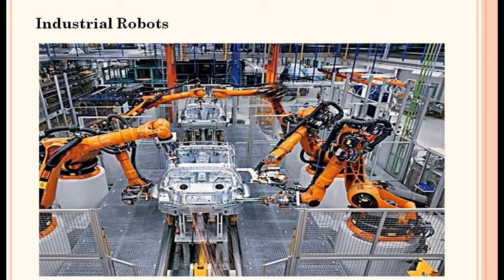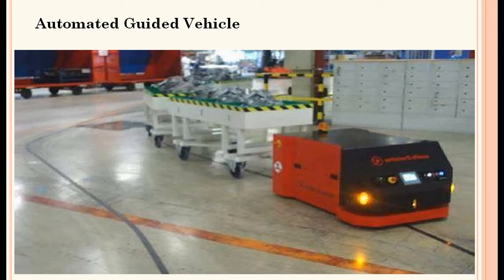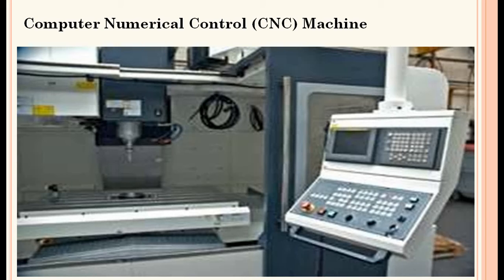Then automated guided vehicles — we need to carry different components and sub-assemblies from one station to another in an automation line. Instead of using human labor, we can use automated guided vehicles. These vehicles follow a particular path and can deliver different jobs, components, or small elements required in assembly from one station to another without human intervention, even for longer durations.